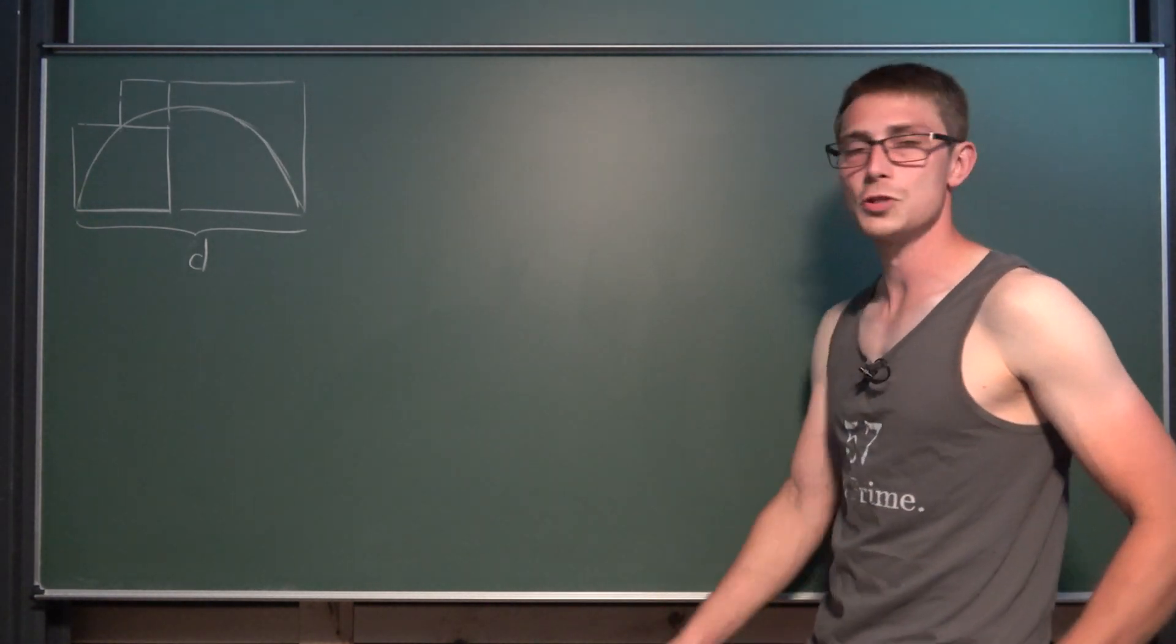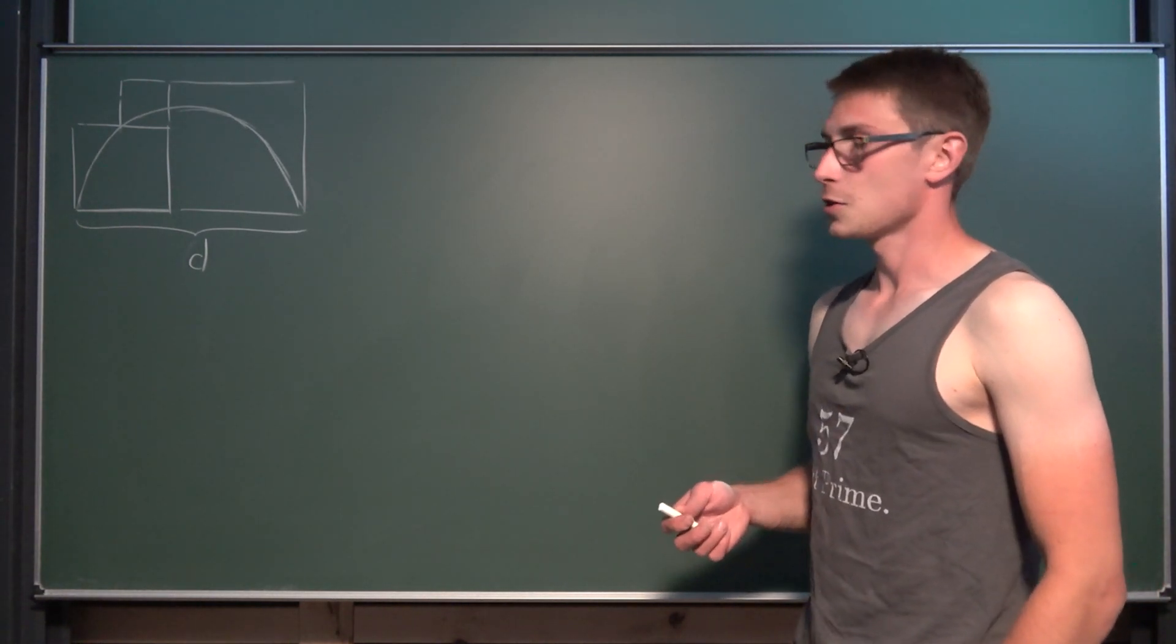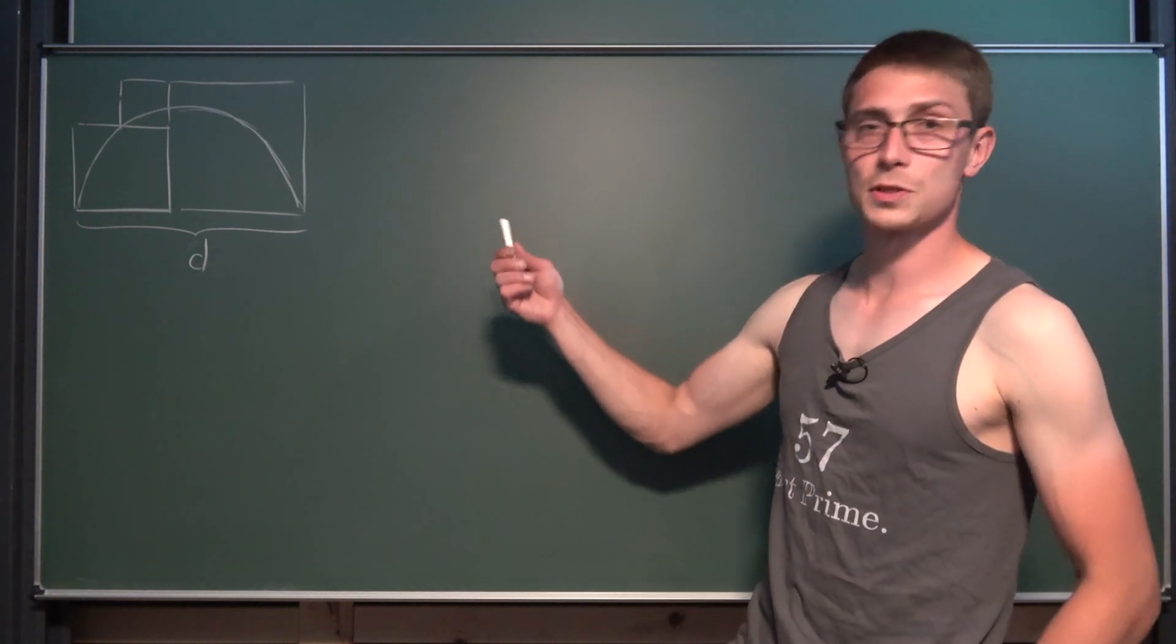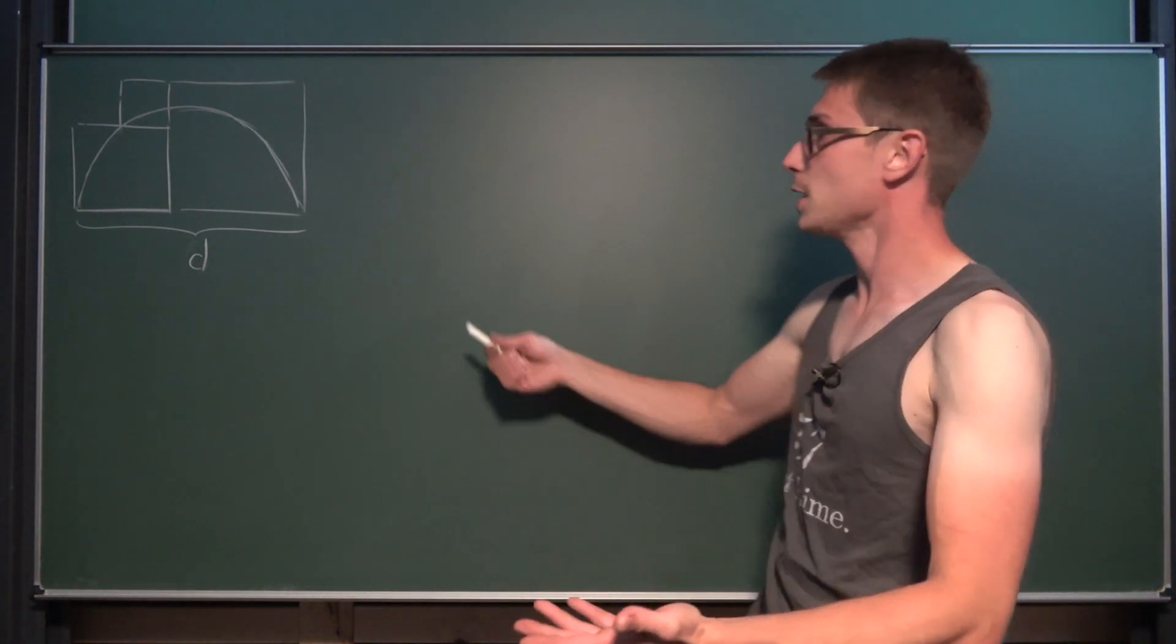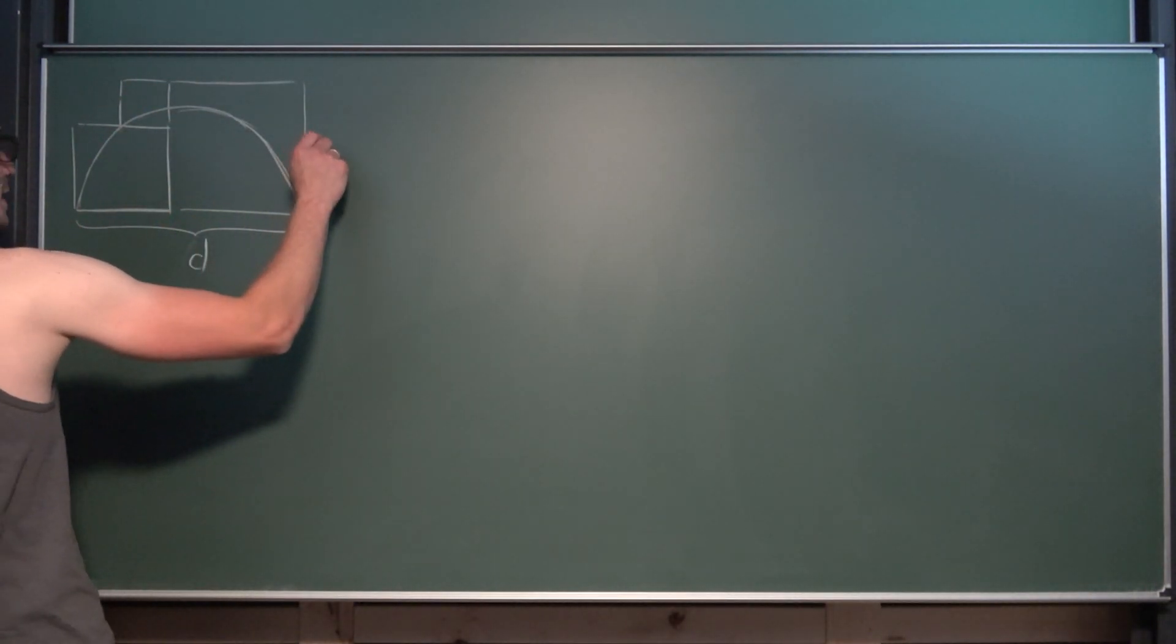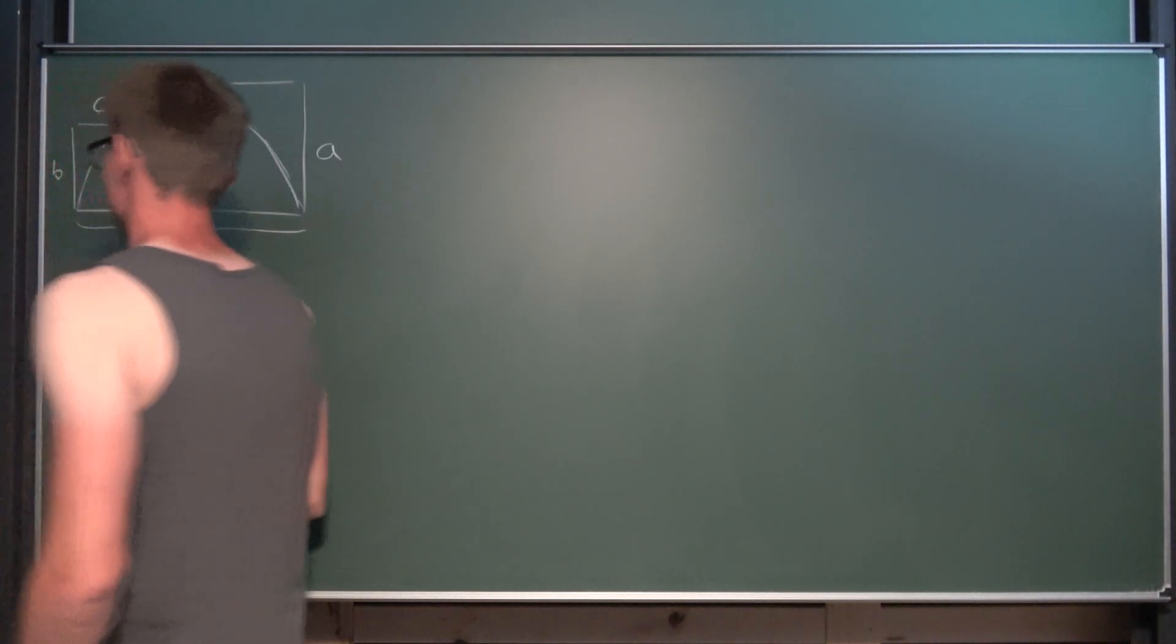Keep watching the video for the solution or post your solution down in the comments below. So the first thing I'm going to do is label a few sides because if we want to get the area of a square, what we want to have is at least one side length, because all the side lengths are the same. So this right here is A, I'm going to call this B, and this right here is C.